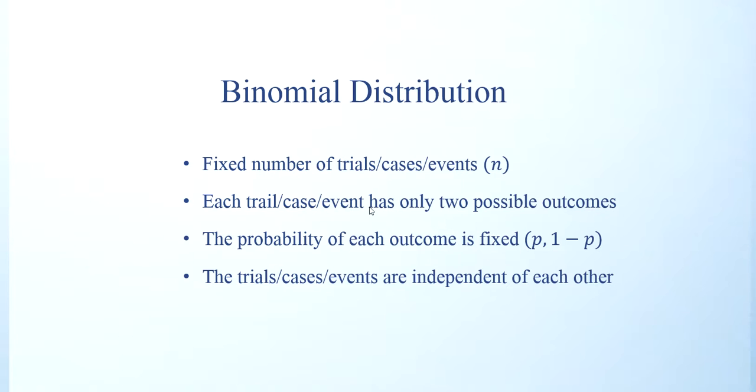Each trial case event can only have two possible outcomes. So when you toss a coin, the outcome is either head or a tail, right? There are only two fixed.